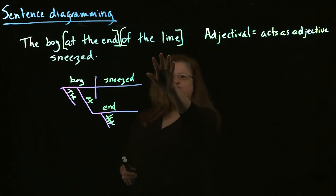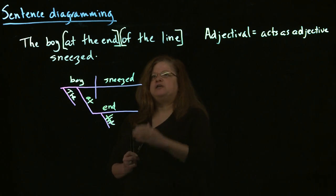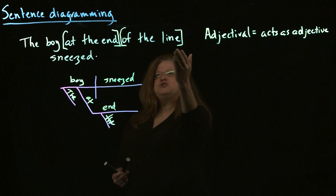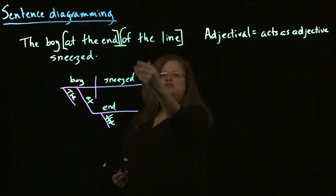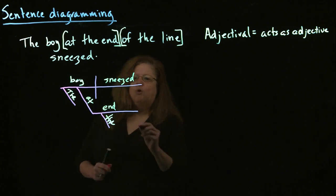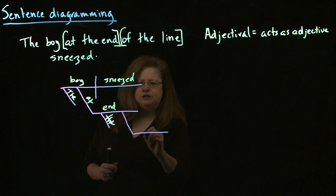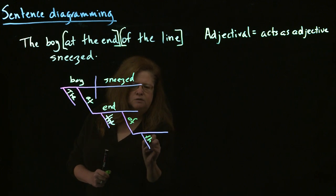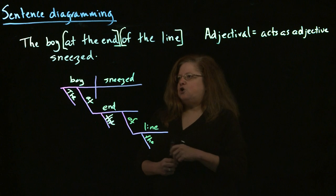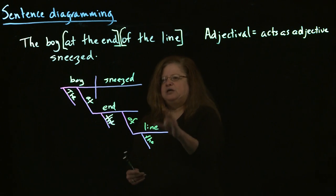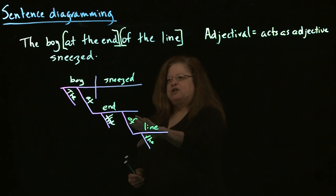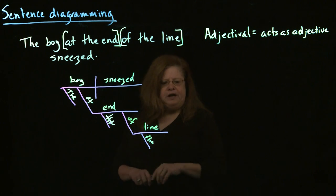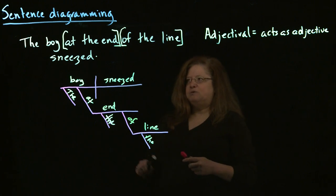Then we have the other prepositional phrase, 'of the line.' We have to ask: what is this modifying? In this case, it's modifying 'end.' Again, it's adjectival — which end is it? It's the end of the line. So we draw another prepositional phrase with 'of' on the diagonal and 'the line' on the level line. What we show is that 'of the line' modifies 'end,' and 'at the end' modifies 'boy.' These are adjectival prepositional phrases.